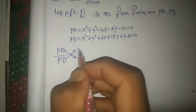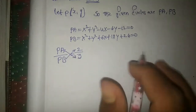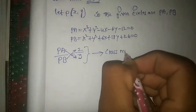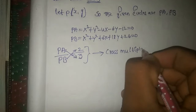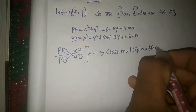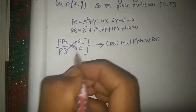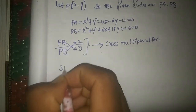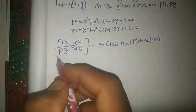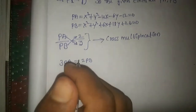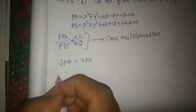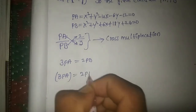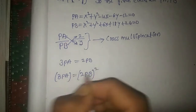By cross multiplication: 3 × PA = 2 × PB. So 3PA = 2PB. Now we square both sides.